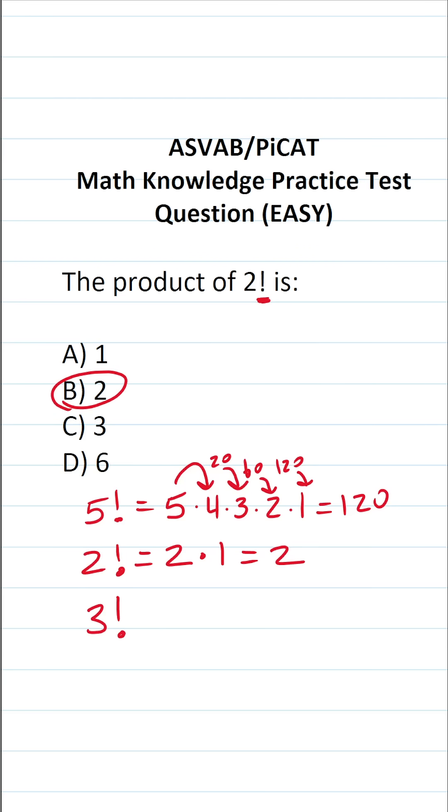Let's say this asks you what is the product of 3 factorial. You're going to take 3. You're going to multiply it by every number that's less than 3 until you get to 1. 3 times 2 is 6. 6 times 1 is 6.